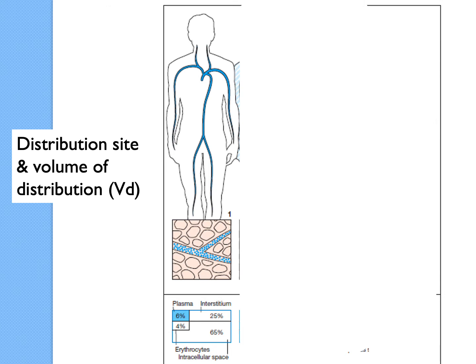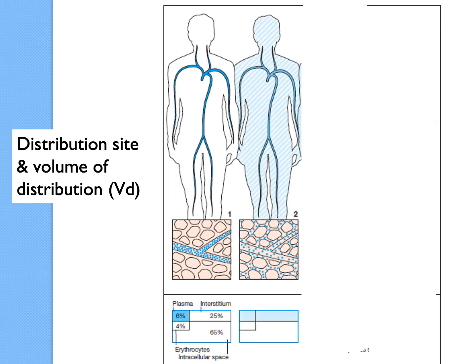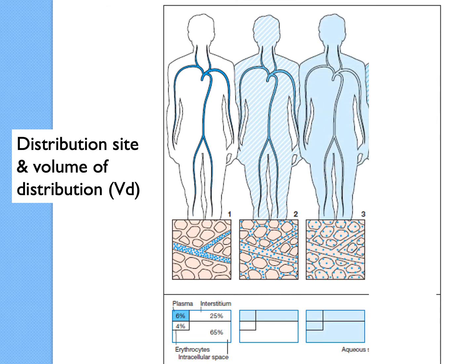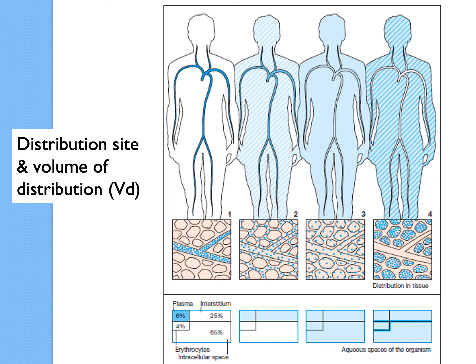There are four different types of distribution sites. Some drug molecules tend to stay within the blood with minimal distribution to other tissues, which can be useful if the drug target is endothelial cells. A second model involves some distribution to tissues, a third involves equal distribution between tissues and blood, and a fourth extreme case is where blood concentration is very low but tissue concentration is very high. These four diagrams help you roughly determine the volume of distribution (VD).